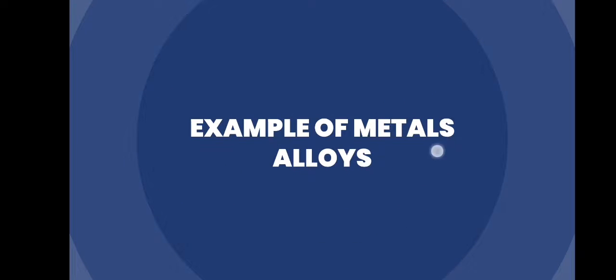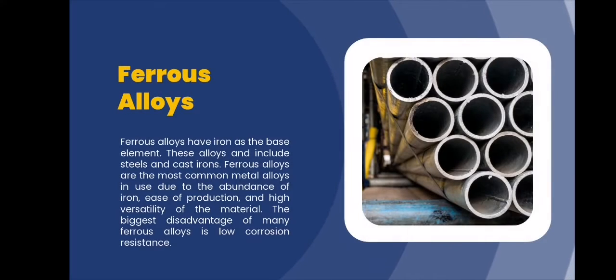Example of metal alloys. First, we have ferrous alloys. Ferrous alloys have iron as the base element. These alloys include steels and cast irons. Ferrous alloys are the most common metal alloys in use due to abundance of iron, ease of production, and high versatility of the material. The biggest disadvantage of many ferrous alloys is low corrosion resistance.